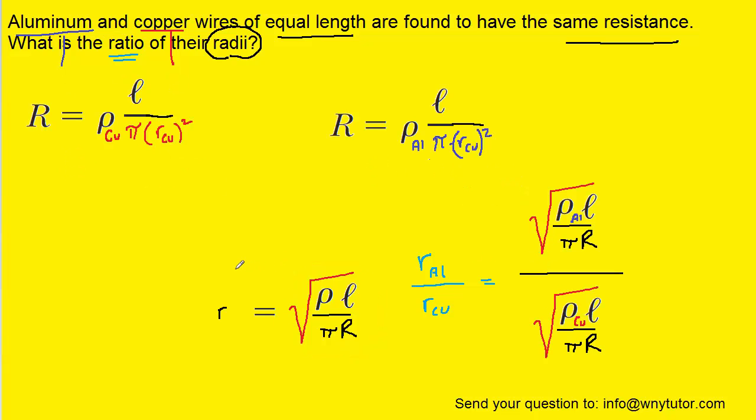So once again, just notice that for each radius we have one for aluminum and one for copper. We are using this expression, the one that we had just solved for the radius. For the aluminum we've put the subscript of aluminum next to its resistivity, and then also for copper the same idea.